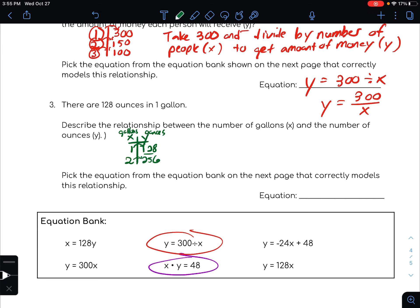So we'll take the number of gallons, which is x, multiplied by 128, is the number of ounces, which is y. So 128 times x is equal to y.